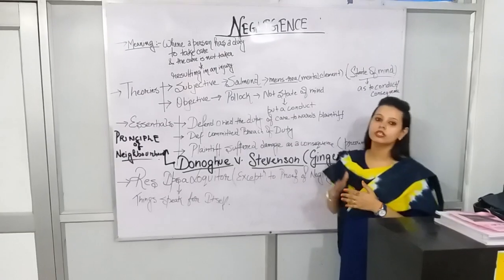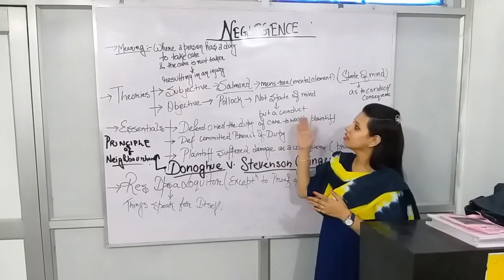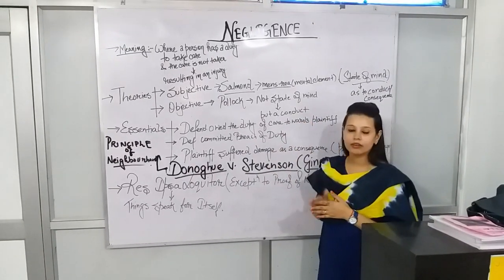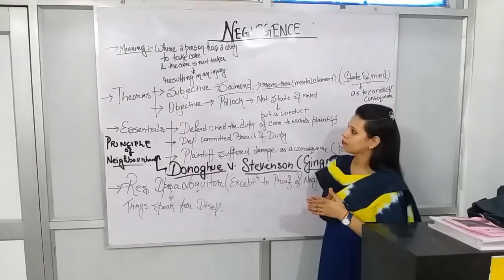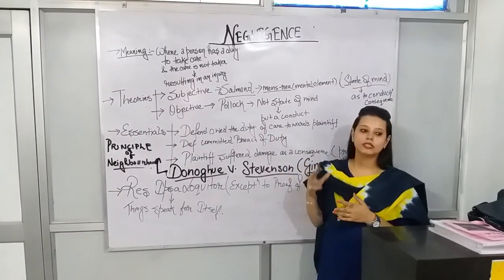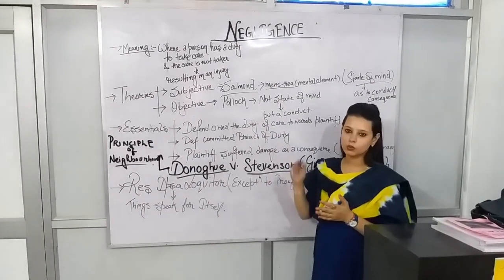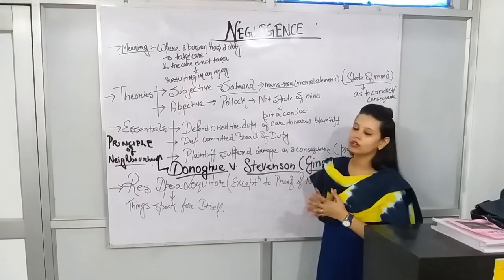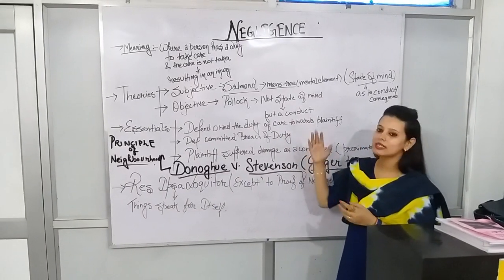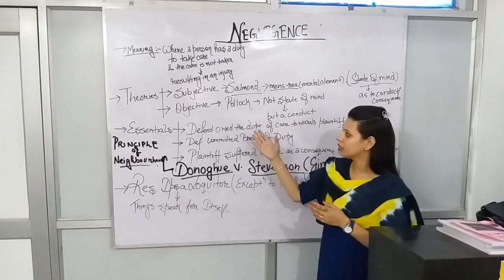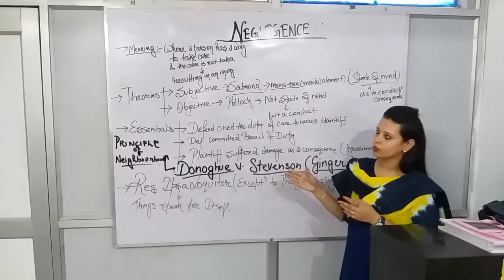A person has a duty to take care, and when that care is not taken resulting in an injury, it constitutes negligence. There are basically two types of theories under the law of negligence: the first one is subjective theory, and the second one is objective theory.